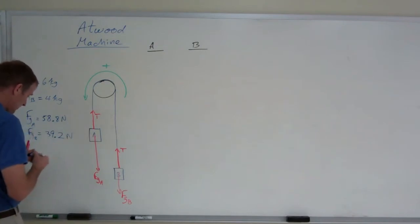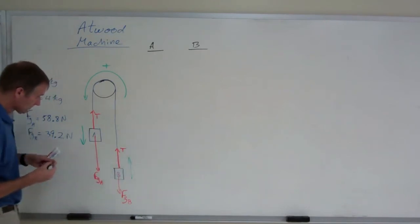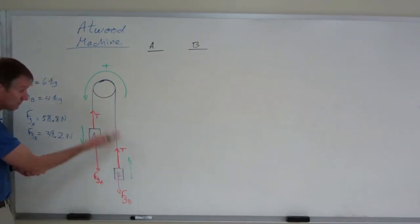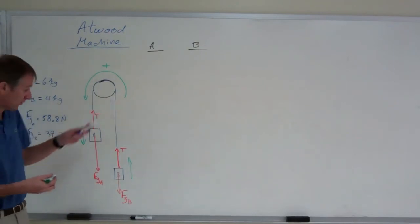A is going to go downwards, accelerate downwards. B is going to accelerate upwards. This weight is greater than the tension. That's why A accelerates downwards. This tension is greater than the weight of B. That's why B accelerates upwards. B has less weight than A. You need to pay attention to those when you draw your force diagram.